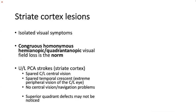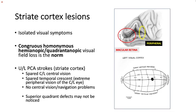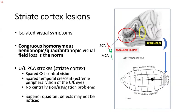Striate cortex lesions usually present with isolated visual symptoms, typically congruous homonymous hemianopic or quadrantanopic field loss. However, in unilateral posterior cerebral artery strokes, a patient may miss the deficit because the macula has dual blood supply and central vision may be spared. Additionally, the deepest part of the calcarine sulcus subserves the peripheral temporal field of the contralateral eye, which can also be spared. Superior quadrant defects may go unnoticed as this part of the visual field is less used in daily activities.